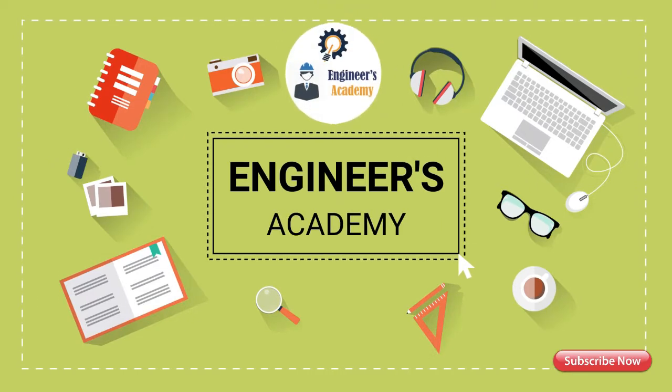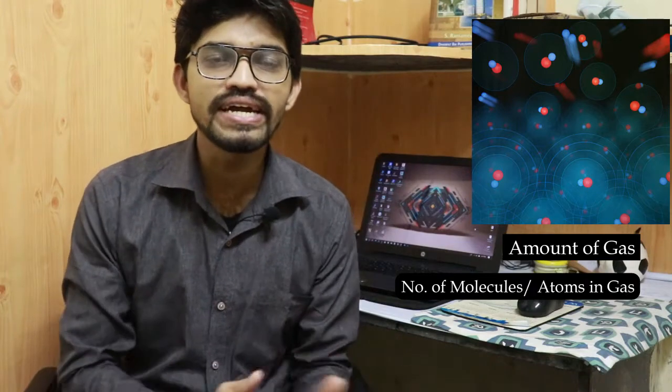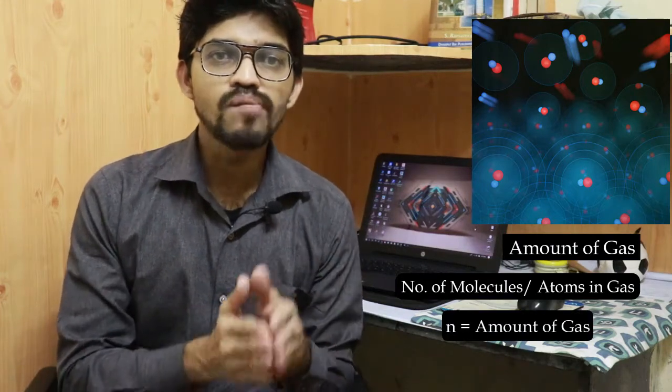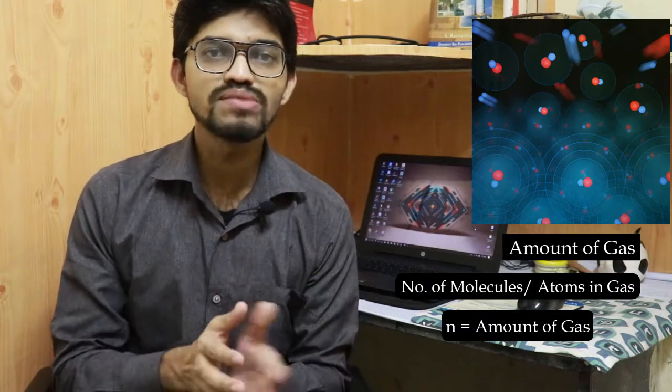In our previous videos on Boyle's law, Charles' law, and Gay-Lussac's law, we talked about pressure, volume, and temperature. In the case of gases there is also a fourth variable — the amount of gas, represented as n — which refers to the number of molecules or atoms present in the gas. In 1811, Amedeo Avogadro discovered a law that relates volume and the amount of gas.